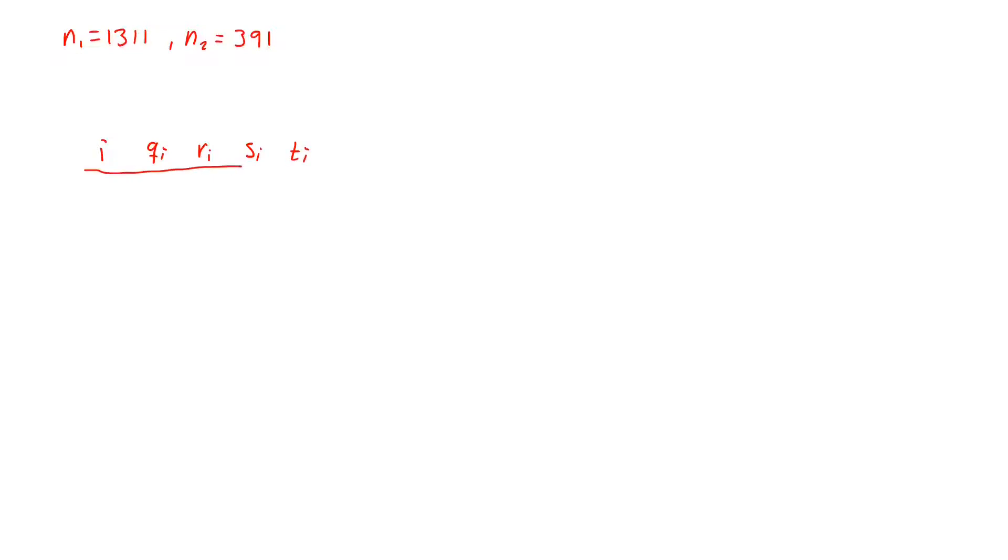So these are the variables that we have in our algorithm, and if we recall how we are initializing our variables, we have i minus 2 and minus 1. So for q we do not have an initialization. For r we initialize them as n1 and n2, so we have 1311 here and we have 391 here. And for s we initialize them as 1 and 0, and for t we initialize them as 0 and 1.